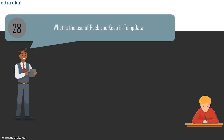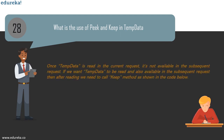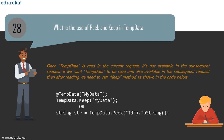The next question is: what is the use of Keep and Peek in TempData? Once TempData is read in the current request, it is not available in the subsequent request. If you want TempData to be read and also available in the subsequent request, after reading you need to call the Keep method — using TempData and invoking your data, then calling Keep in that format. A shortcut way of achieving the same is by using Peek, which reads the data and also advises MVC to maintain TempData for the subsequent request.